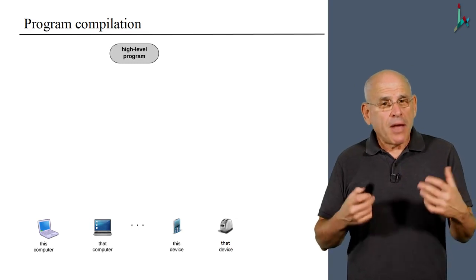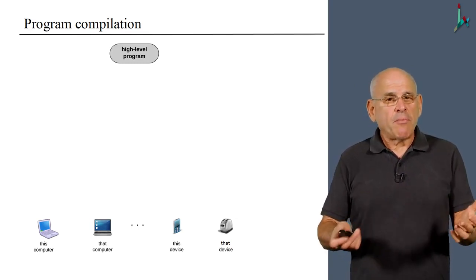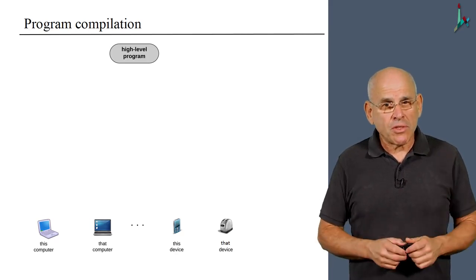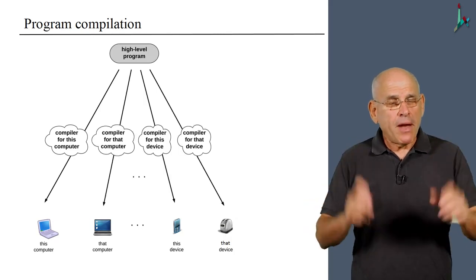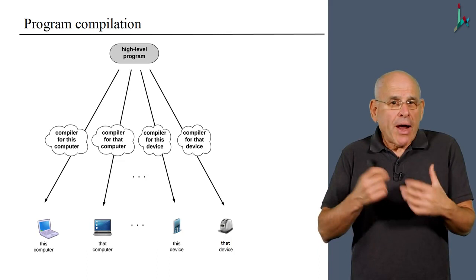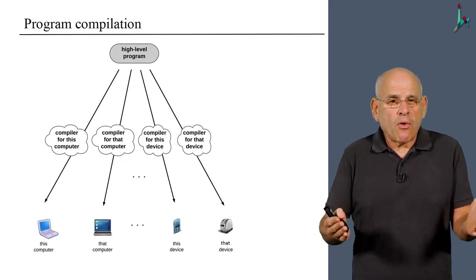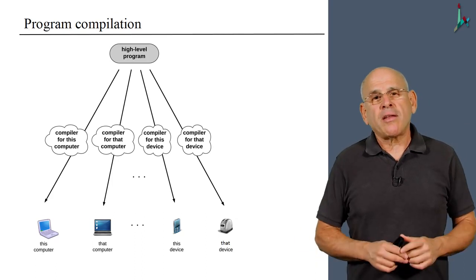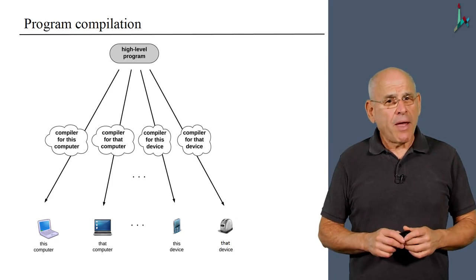The problem is that many of these devices use different processors. These different processors have different machine languages. So it's not enough to write one compiler only. You have to develop many compilers, one for every different processor. If you are practicing software developers, you have to translate your program to many different target platforms. You have to maintain multiple versions of your code, which is a major pain.